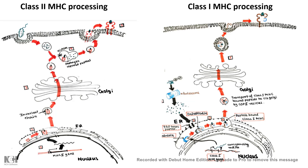In the case of class 1 MHC, the peptides that need to be displayed on the surface of the cell are loaded onto the class 1 MHC's antigen-binding groove in the ER with the help of calnexin and calreticulin chaperones.